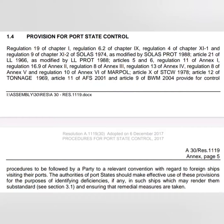Then further: article 21 of Load Line; regulation 11 of annex 1, regulation 16.9 of annex 2, regulation 8 of annex 3, regulation 13 of annex 4, regulation 8 of annex 5 and regulation 10 of annex 6 of MARPOL; and article 10 of STCW; article 12 of Tonnage 1969; article 11 for AFS 2001; article 9 for the Ballast Water Management Convention — all provide for control procedures to be followed by a party to a relevant convention with regard to foreign ships visiting their ports. The authorities of port states should make effective use of these provisions to identify deficiencies, if any, that render ships substandard, and ensure that remedial measures are taken.